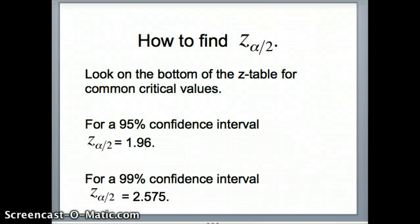How to find z-alpha by 2? Look on the bottom of the z-table for the critical values, and you can see for a 95% confidence interval, we use 1.96. For a 99% confidence interval, we use 2.575.